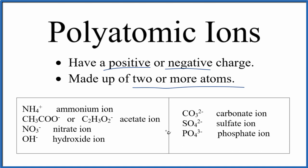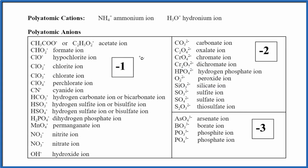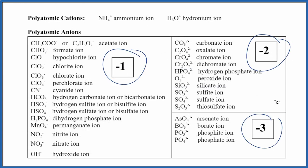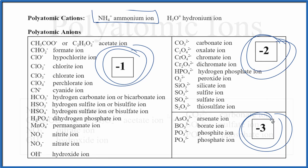Here are some examples of polyatomic ions — these are really good ones to memorize. They come up all the time. Most polyatomic ions are going to be negative, called anions. Only a few have a positive charge, and really the main one we'll look at is NH4+, the ammonium ion. It can bond with any of these negative polyatomic ions.